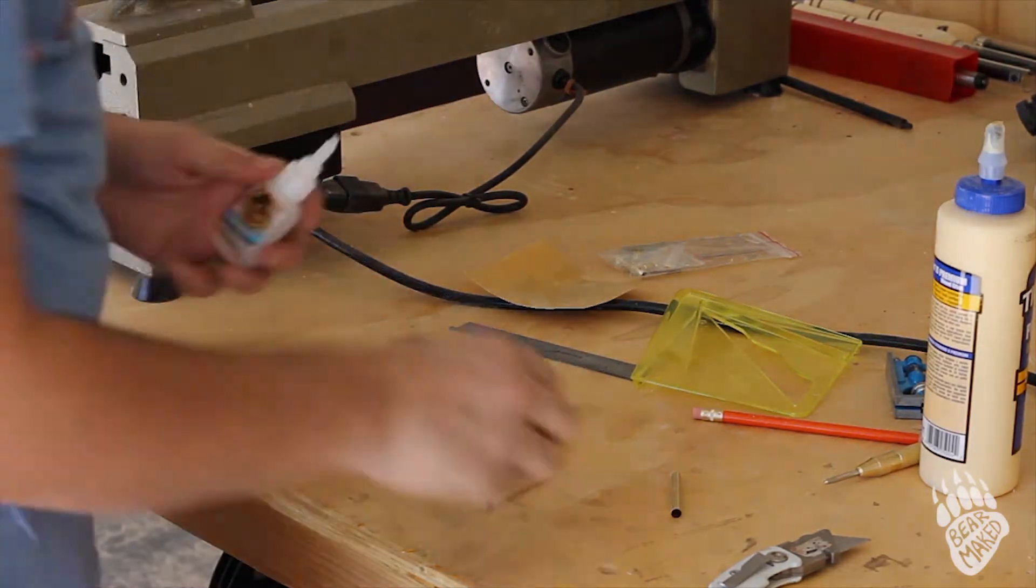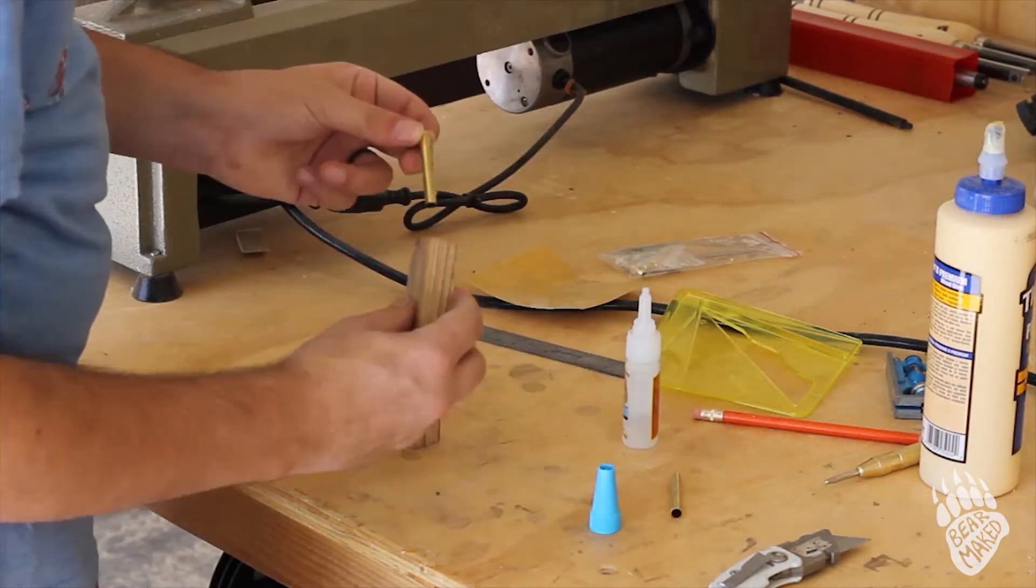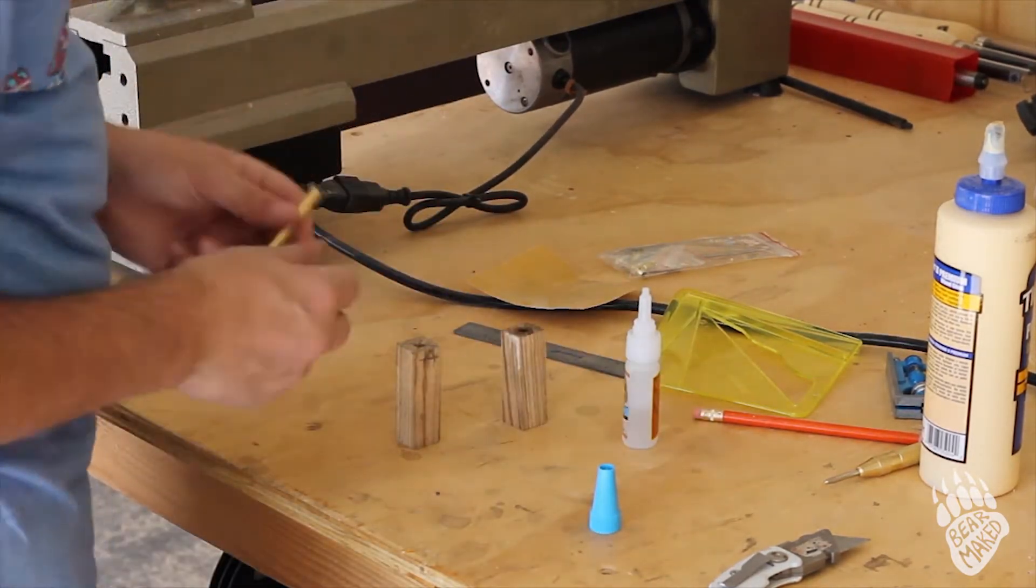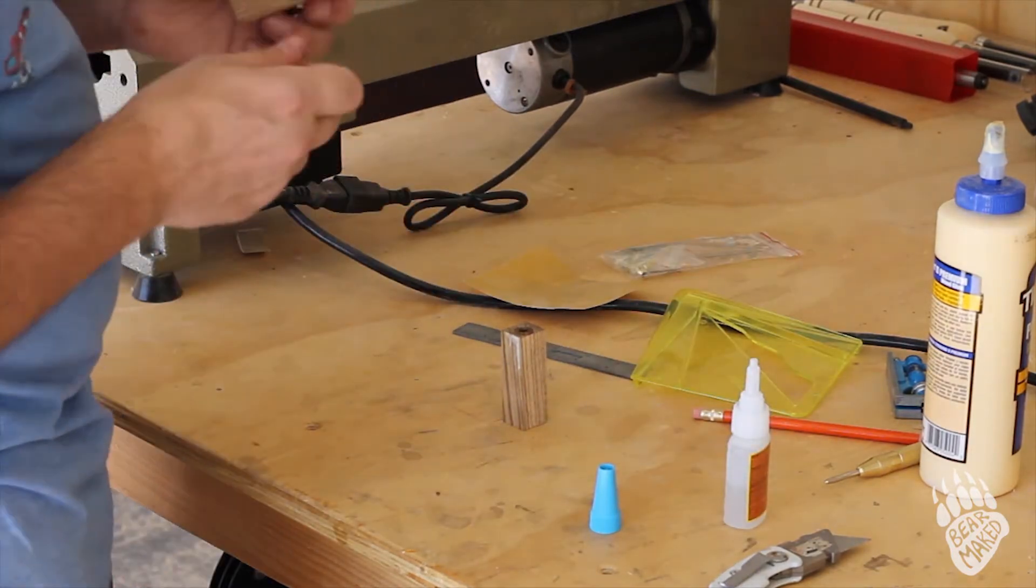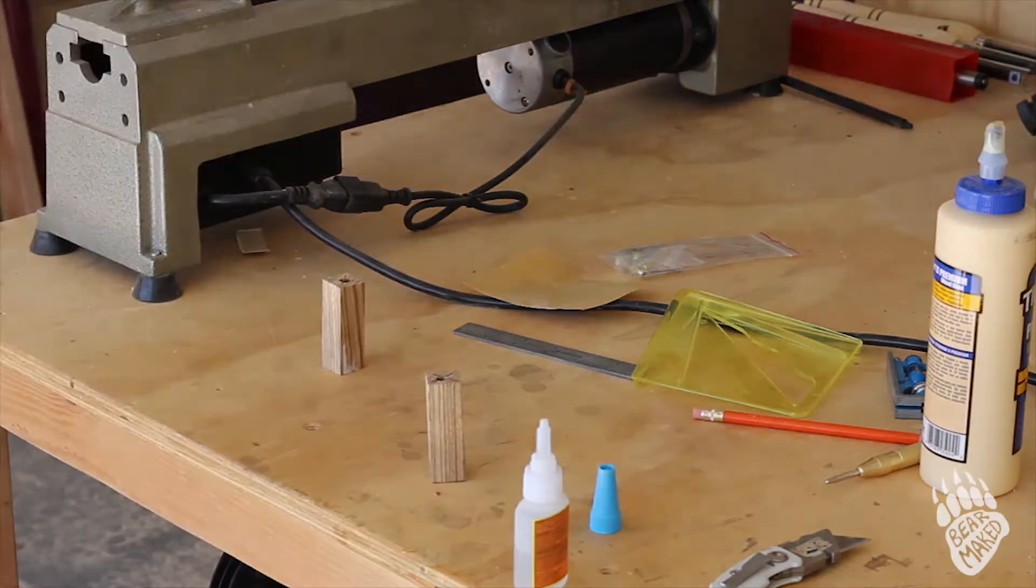And it's got to get the tubes glued in. Just use super glue. You scuff up the tubes with some sandpaper to give the super glue something to really grip onto, and then just push them in there.